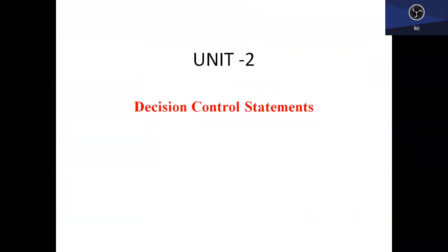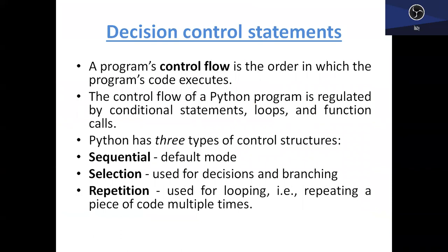Good morning. Today I will discuss Unit Number 2 of PPS subject, that is Decision Control Statements. A program's control flow is the order in which program code executes. Some programs decide how it will execute — which statement will execute first and then which statement will execute after that. We decide the flow of the program using decision control statements. The control flow of a Python program is regulated by conditional statements.